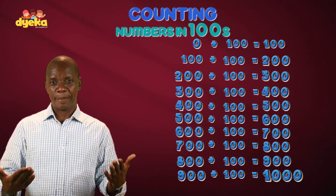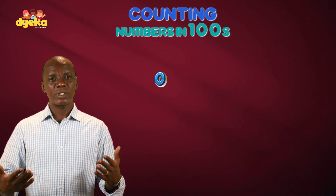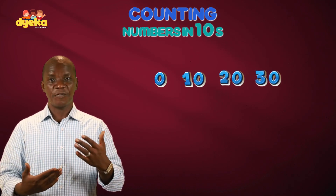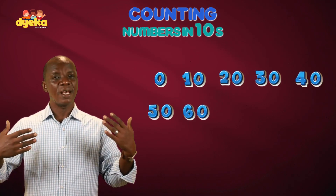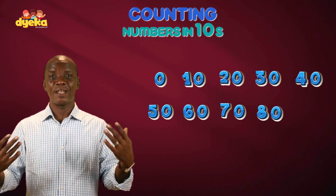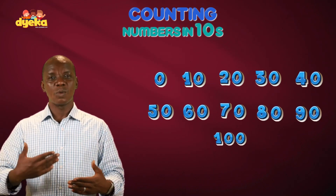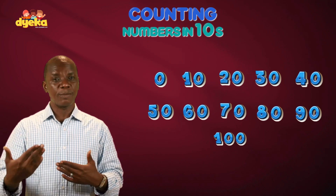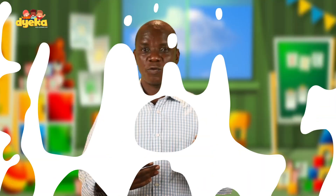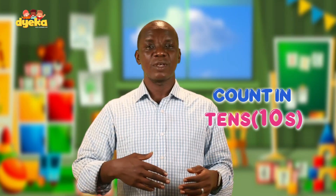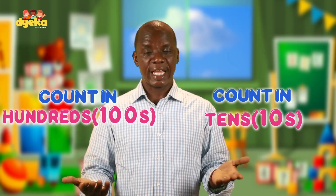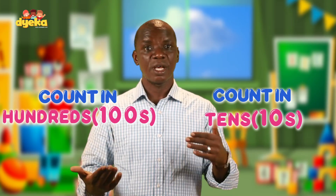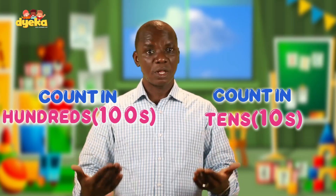So let me just do a quick recap. Counting in tens, we did: 10, 20, 30, 40, 50, 60, 70, 80, 90, and 100. And we can go on: 110, 120, and we can keep going on like that. So if you can count in tens and you can count in hundreds, then you can also keep counting in tens and hundreds until you get to 1000.